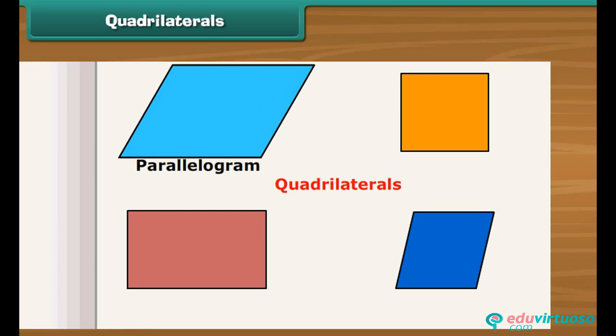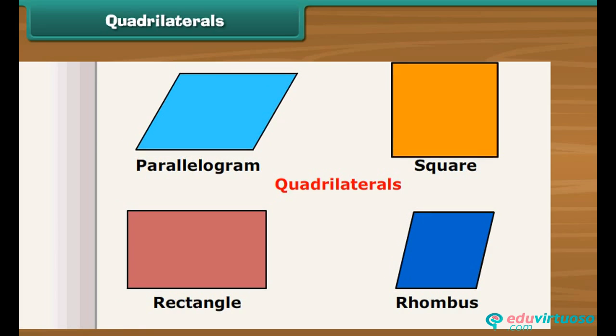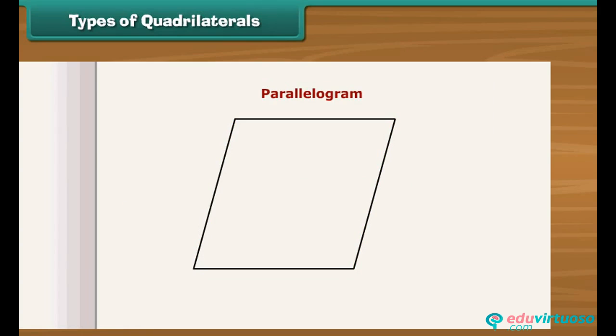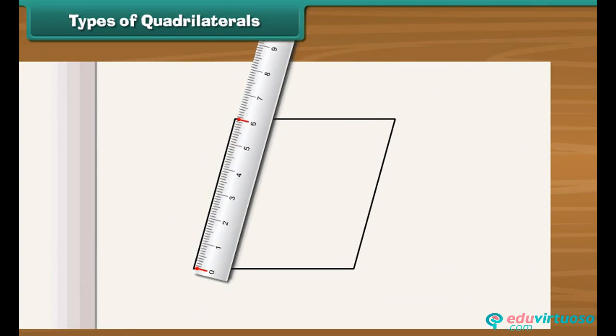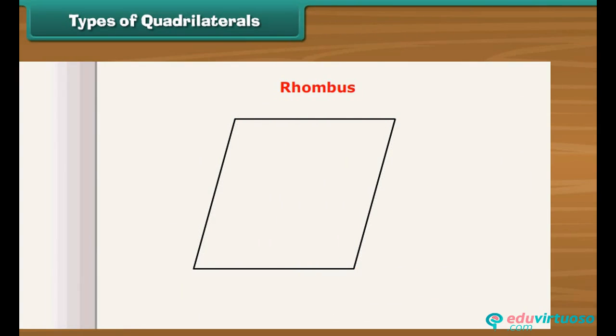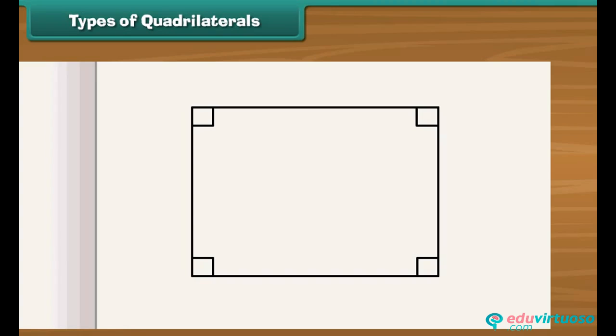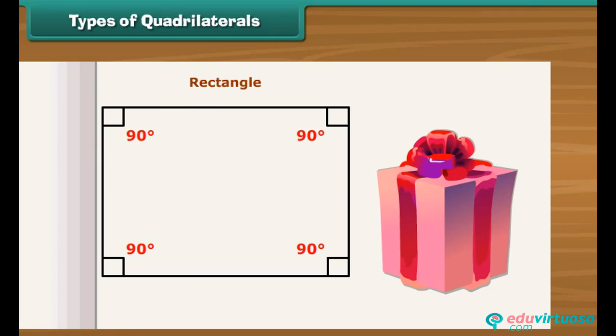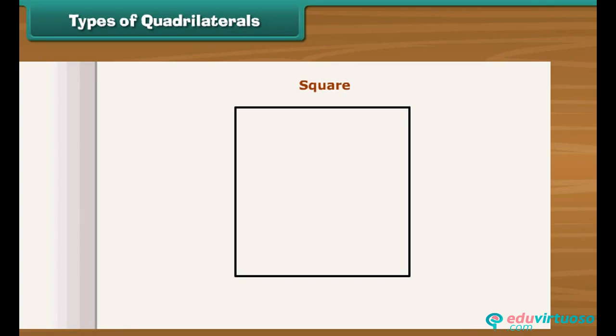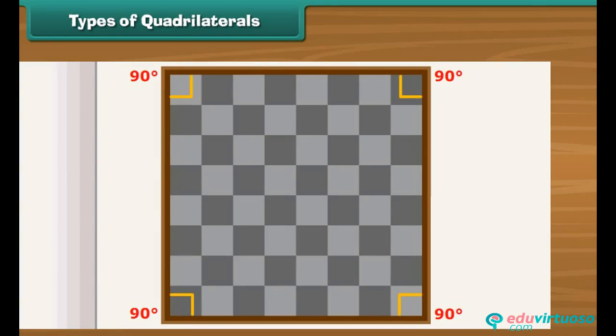These are parallelogram, rectangle, rhombus, and square. Let us discuss each type in detail. A quadrilateral having opposite sides parallel is called a parallelogram. For example, slide is a parallelogram. A parallelogram in which all four sides have the same length is called a rhombus. Look at this painting. This is a rhombus. A parallelogram in which all angles are right angles, that is 90 degrees, is called a rectangle. For example, this gift bag is a rectangle. A square is a parallelogram in which all angles are right angles and all sides have same length. Hey friends, do you enjoy playing chess? Look at the chess board. It is square in shape.